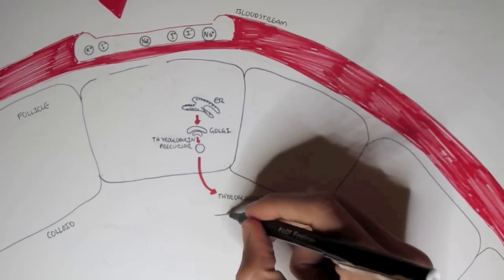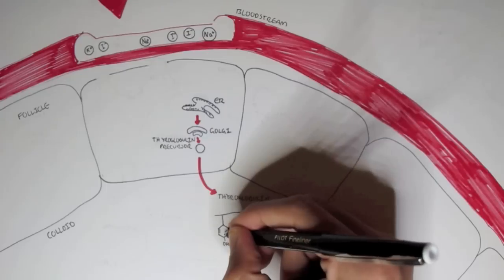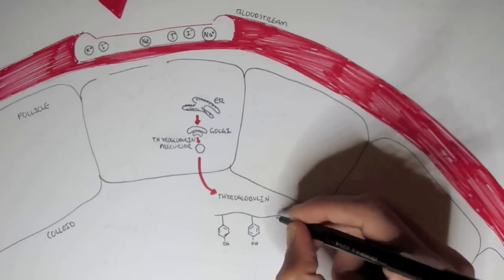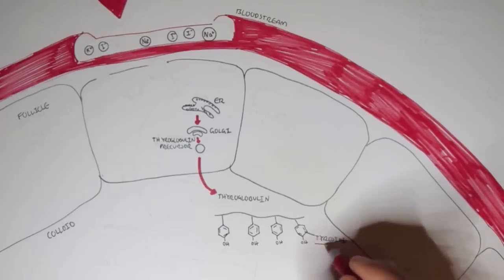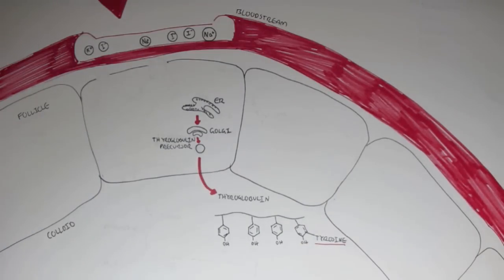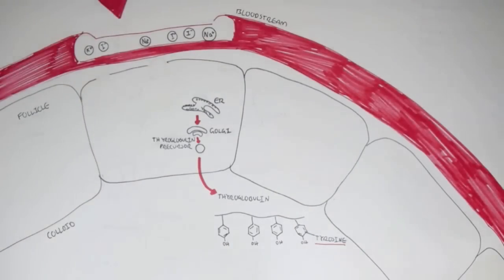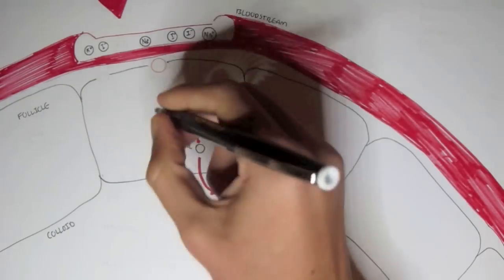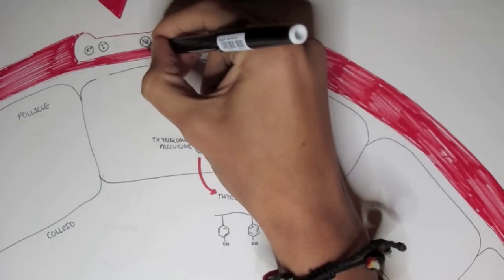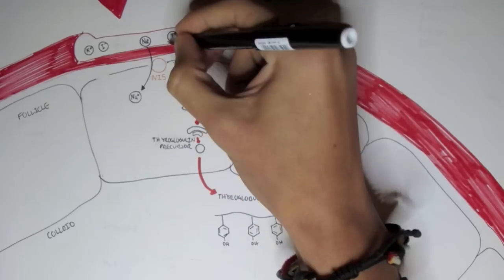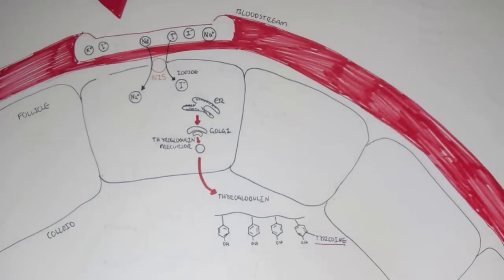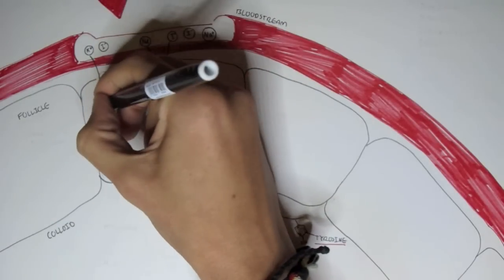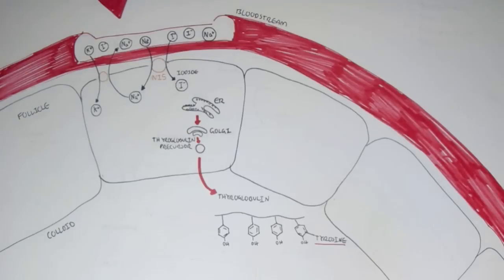Thyroglobulin is a carbon chain consisting of many tyrosine molecules attached to it. To synthesize thyroid hormones we need iodide. There is a transporter known as the sodium-iodine symporter which transports sodium and also pumps iodide into the follicular cells at the same time. The sodium can go back out when potassium gets pumped in and is exchanged for sodium.